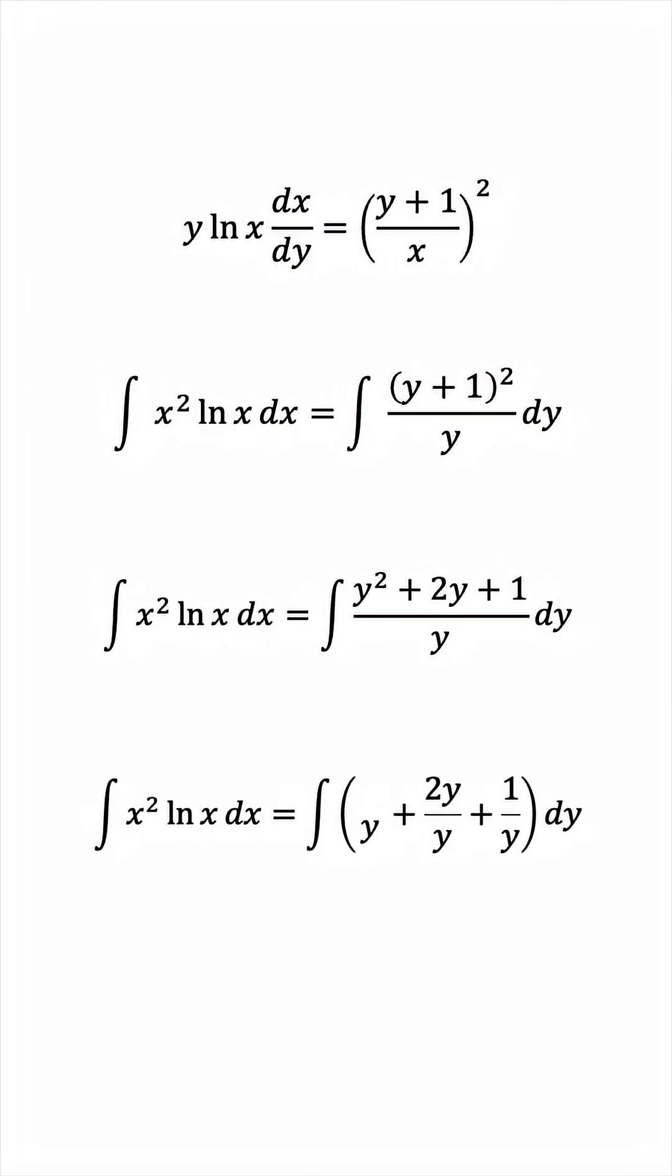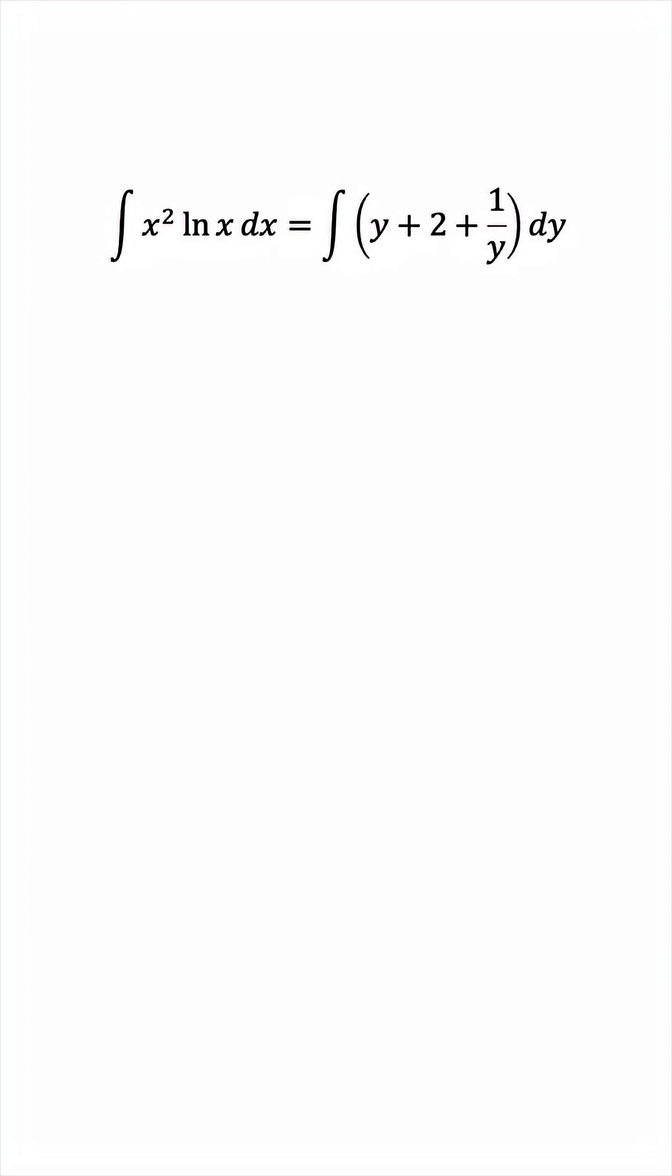This will become y plus 2 plus 1 over y. And the antiderivative of this is very easy. 1 half y squared plus 2y plus the natural log of the absolute value of y.